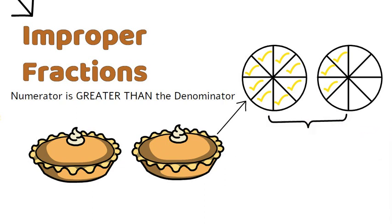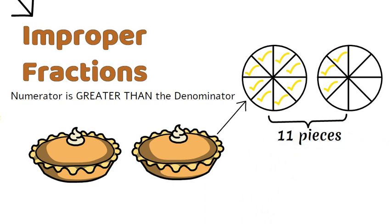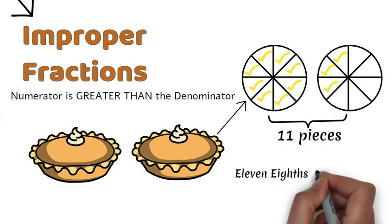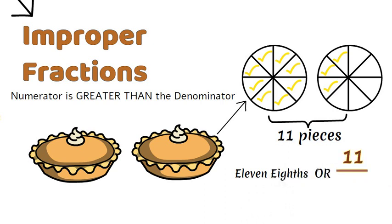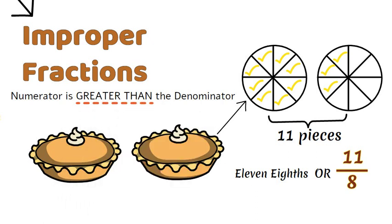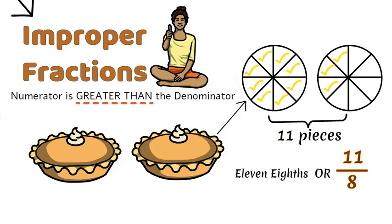altogether I have selected 11 pieces. The fraction would therefore be 11 eighths, or 11 over 8. As you can see, the numerator is greater than the denominator, so this is an improper fraction.